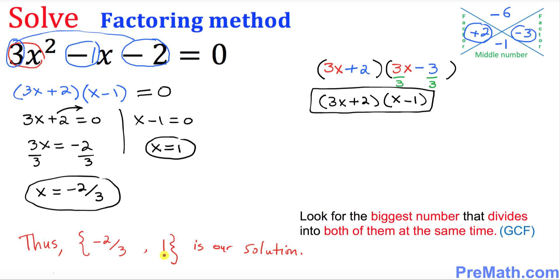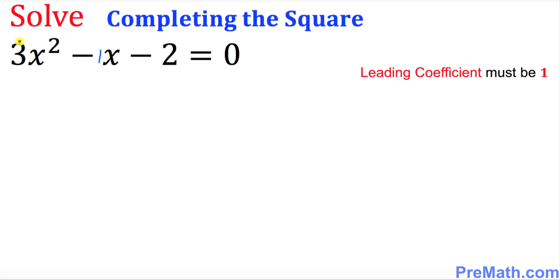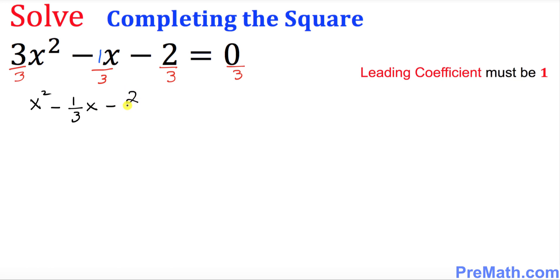In the second method we will be solving this quadratic equation by completing the square. The coefficient over here is missing, so I'll put down 1 by default. The next step is we want the leading coefficient to be 1, but it is 3 right now. We're going to divide by 3 to make it 1, dividing each and every term across the board by 3.